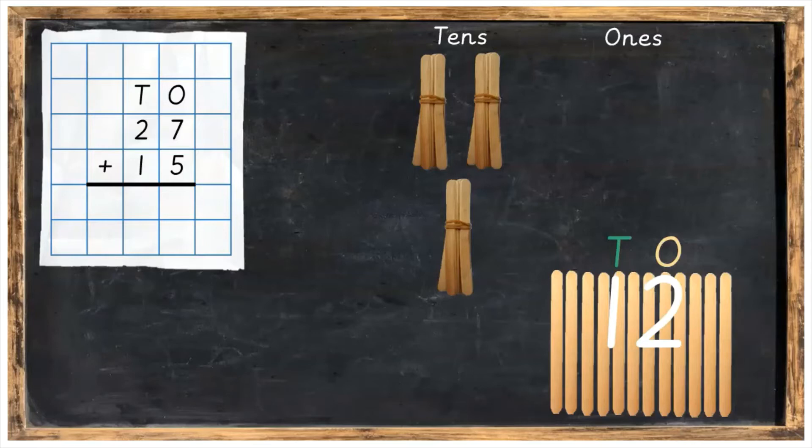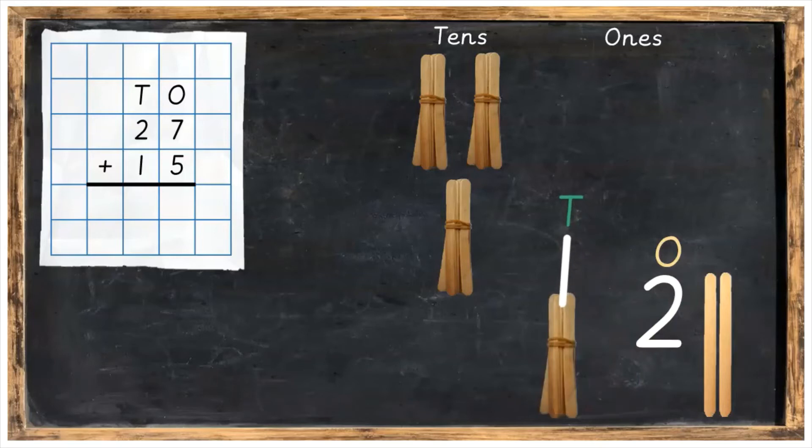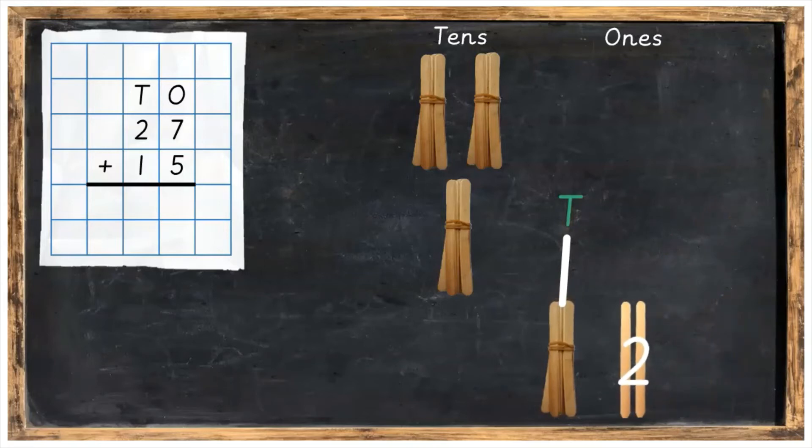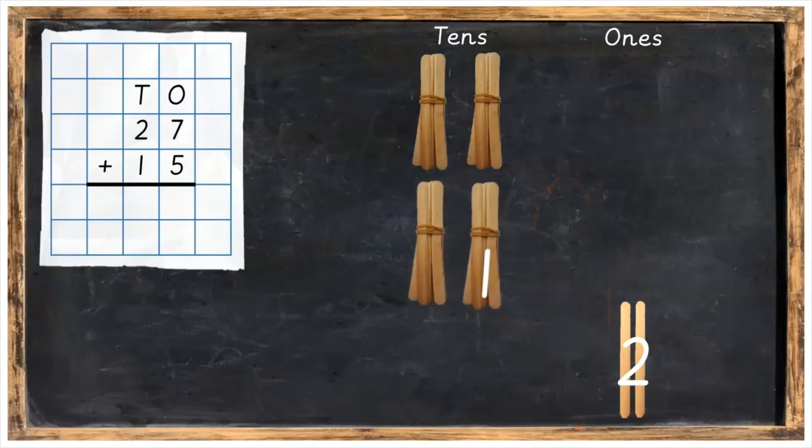So we're going to bring the tens where they belong to in the tens column. We will do this by bundling the 10 together and leave the two ones where they should be. We're now going to bring over that 10 into the tens column. And here is our 12.